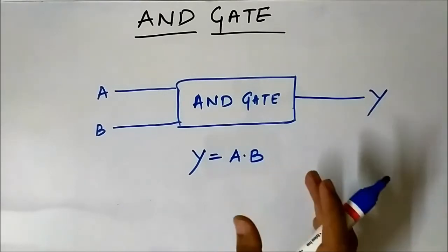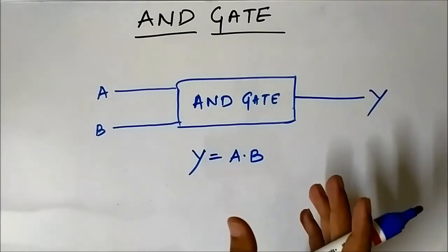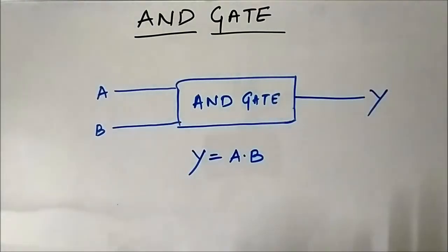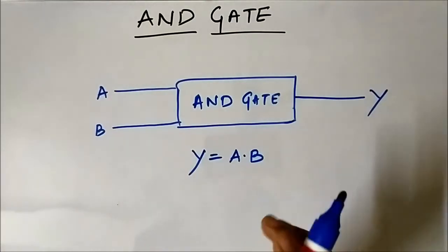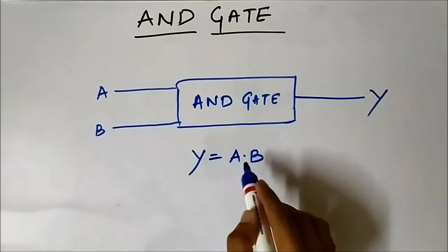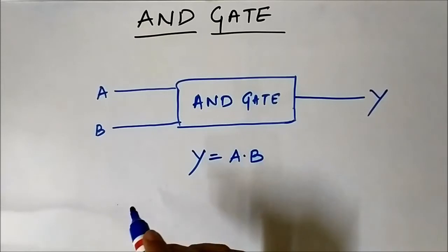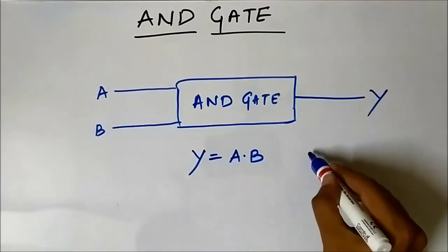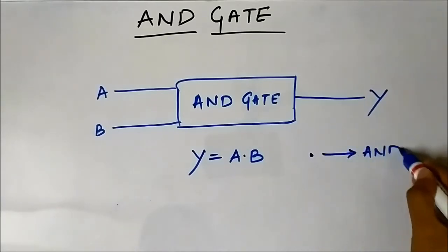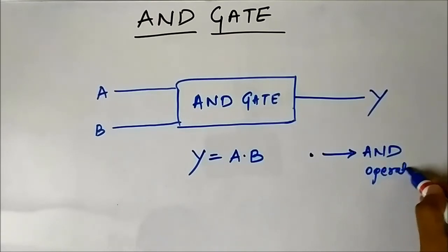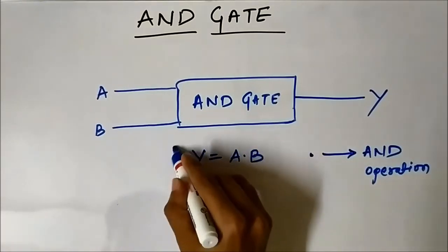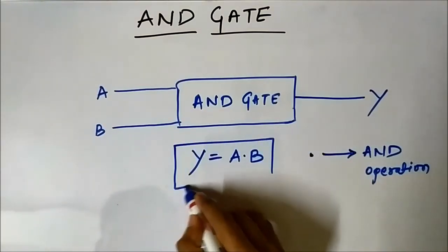I am using the word 'multiplication' to help you understand what is going on, but in digital terms we never use the word multiplication. Wherever you see A dot B, you say it as 'A and B'. This dot represents the AND operation, and this is the output of the AND gate.